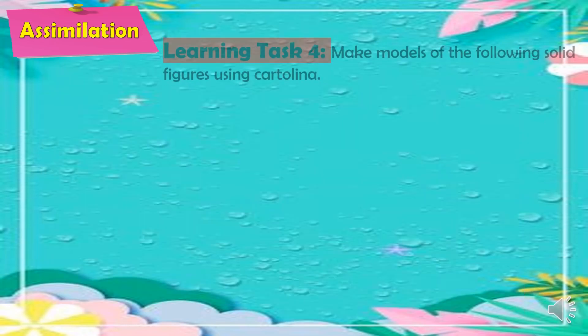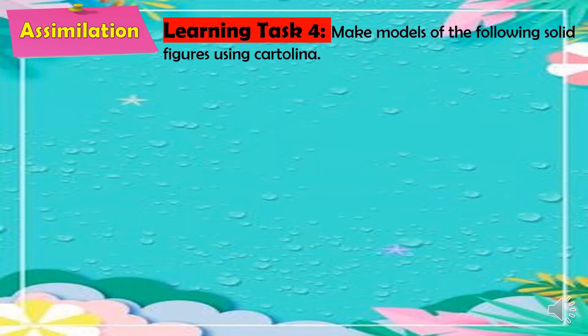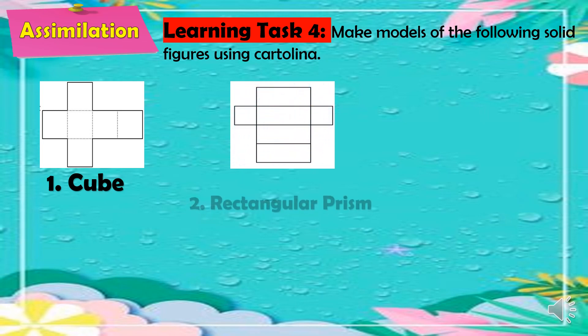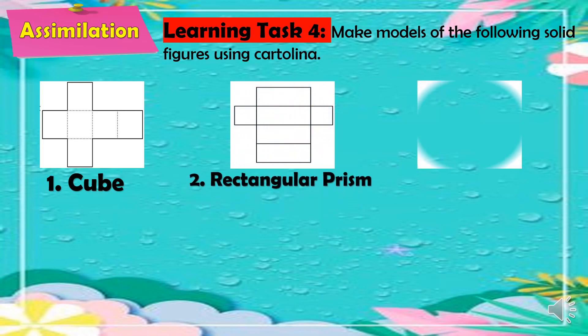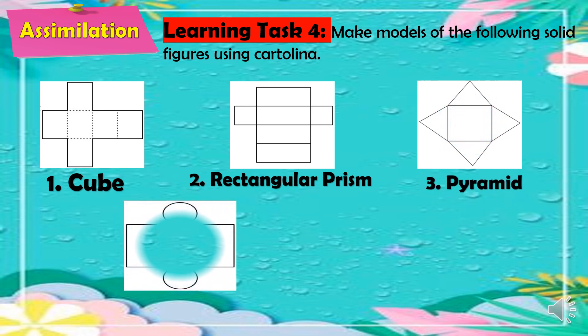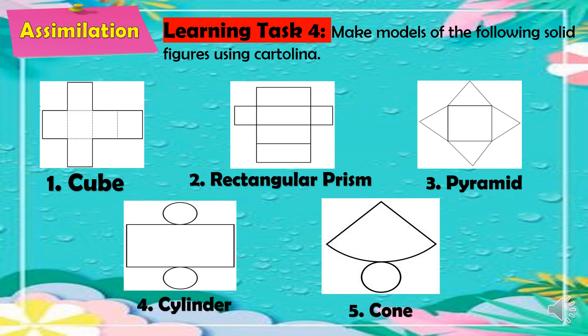For the simulation, Learning Task 4: make models of the following solid figures using cartolina. You will make a cube, a rectangular prism, a pyramid, a cylinder, and a cone.